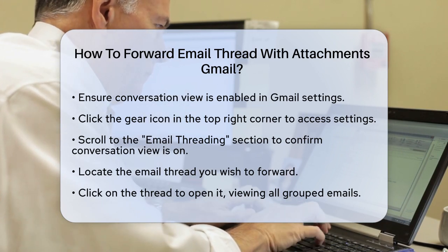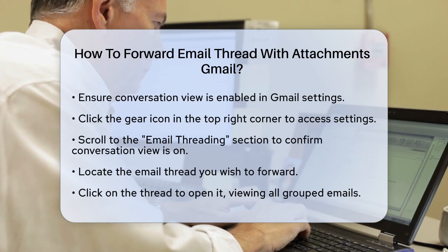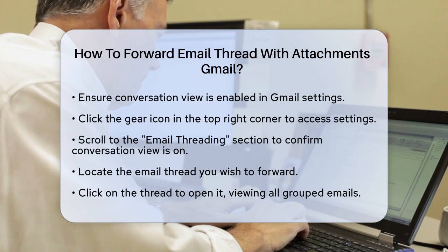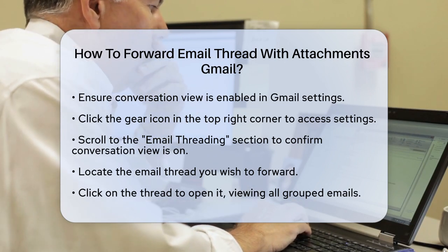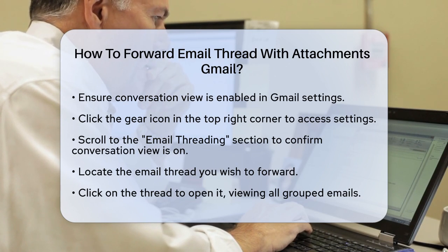Scroll down to the Email Threading section and make sure the conversation view is enabled. Next, locate the email thread you want to forward. Since you've enabled conversation view, all the emails in the thread will be grouped together. Click on this thread to open it.